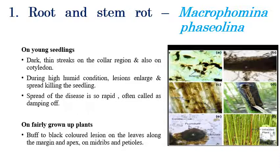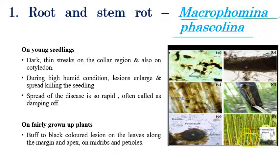The first disease is root rot and stem rot, which is caused by Macrophomina phaseolina. In seedlings, thin streaks can be seen at the collar region. During favorable conditions, these small streaks enlarge and kill the seedlings at the initial stage.